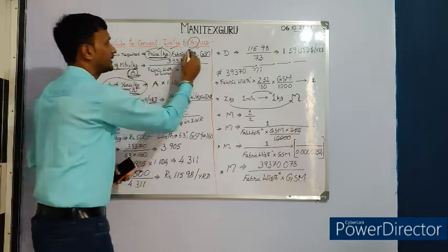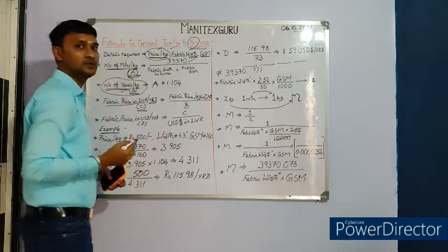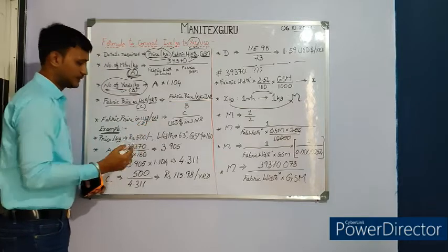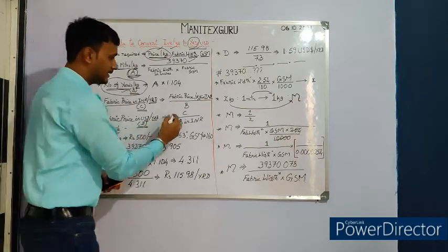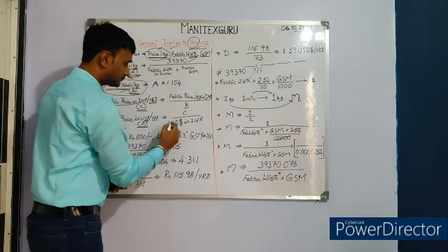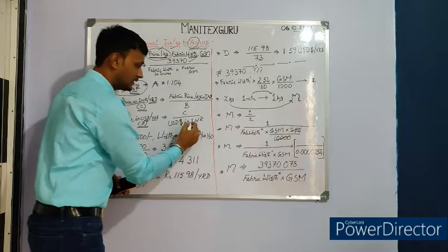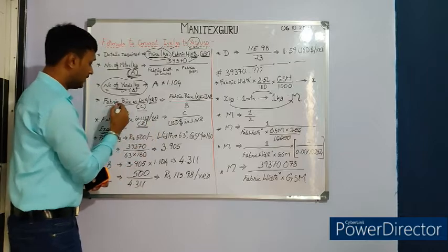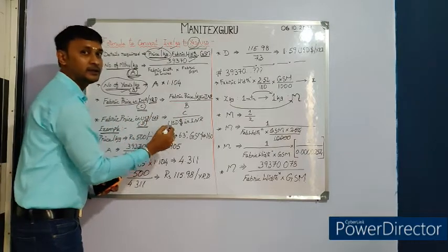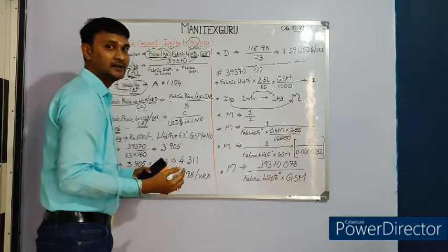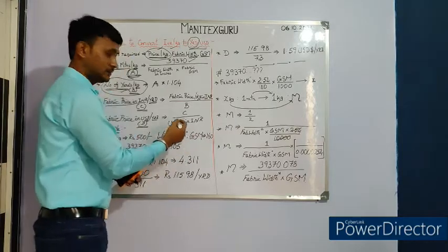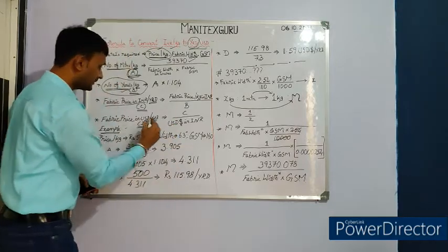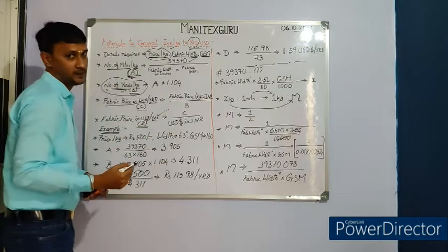Step four — the final target — fabric price in USD per yard, noted as D. D equals C divided by the current USD price in INR. By dividing the fabric price in INR per yard by the present USD exchange rate in INR, we get the fabric price in USD per yard.